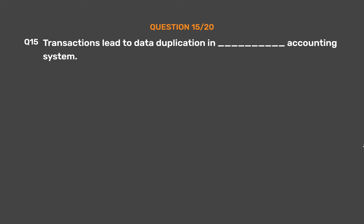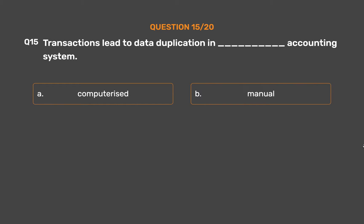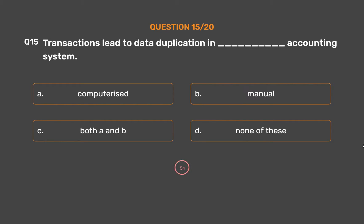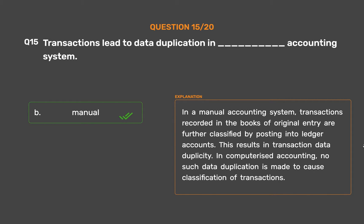Question number 15. Transactions lead to data duplication in underscore accounting system. Option A: Computerized. Option B: Manual. Option C: Both A and B. Option D: None of these. The correct answer is Option B — Manual. In a manual accounting system, transactions recorded in the books of original entry are further classified by posting into ledger accounts, which results in transaction data duplication. In computerized accounting, no such data duplication occurs.